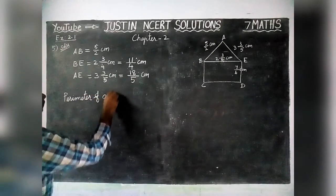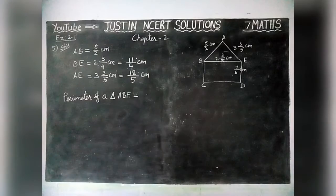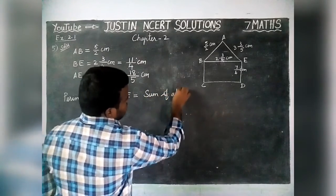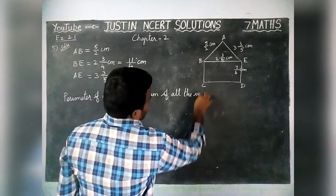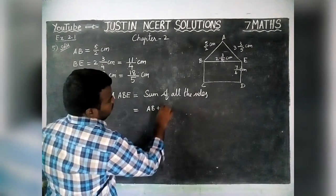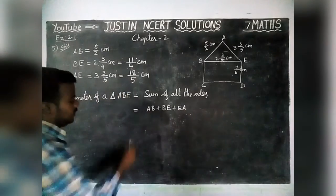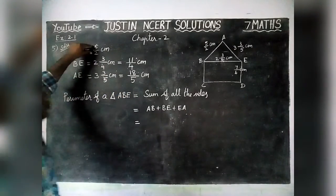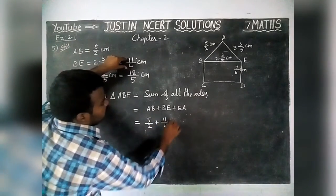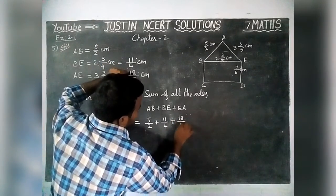Perimeter of triangle ABE is equal to the sum of all the sides: AB + BE + AE. Here, AB equals 5/2, BE equals 11/4, and AE equals 18/5.